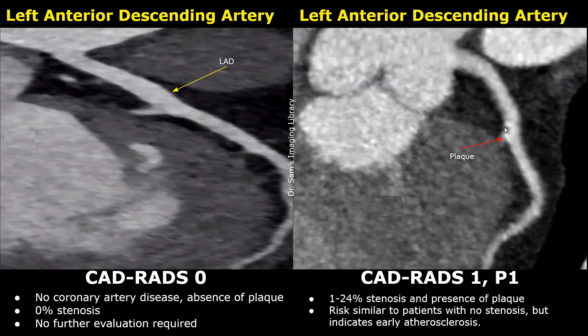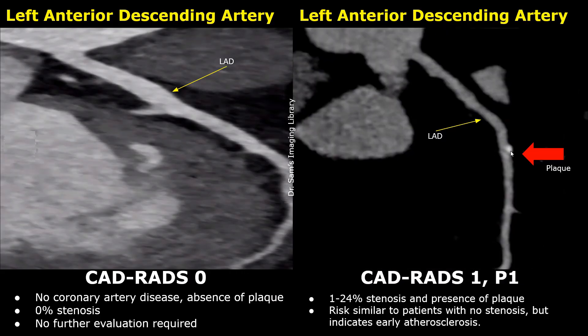Two small high-density calcified plaques are seen in the left anterior descending artery. The stenosis is between 1 and 24% of the lumen, and plaque burden is mild. In this next case, a small calcified plaque is seen in the middle segment of the left anterior descending artery. One-fourth of the lumen is narrowed, so it is classified as CADRADS-1, P1.